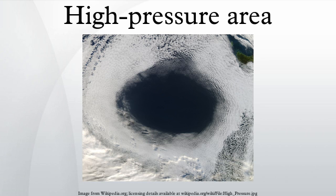Strong, vertically shallow high-pressure systems moving from higher latitudes to lower latitudes in the northern hemisphere are associated with continental Arctic air masses. Once Arctic air moves over an unfrozen ocean, the air mass modifies greatly over the warmer water and takes on the character of a maritime air mass, which reduces the strength of the high-pressure system. When extremely cold air moves over relatively warm oceans, polar lows can develop. However, warm and moist air masses that move from tropical sources are slower to modify than Arctic air masses.